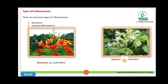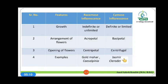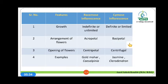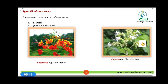Let us discuss the distinguishing features between racemose and cymose inflorescence. In racemose inflorescence, growth is indefinite or unlimited, while in cymose inflorescence it is definite or limited. About the arrangement of flowers: in racemose inflorescence the arrangement is acropetal, while in cymose inflorescence the arrangement is basipetal.